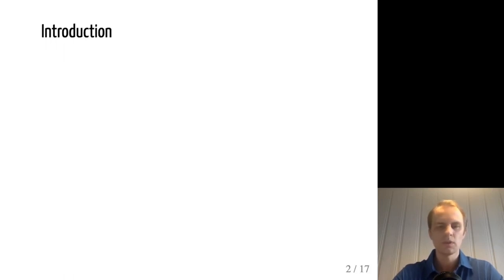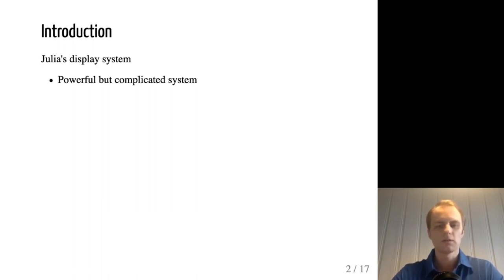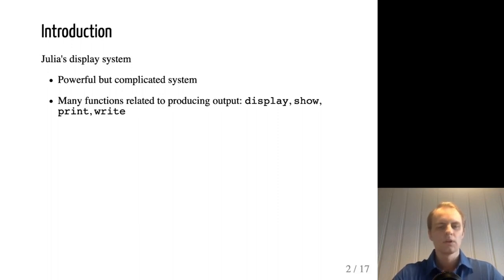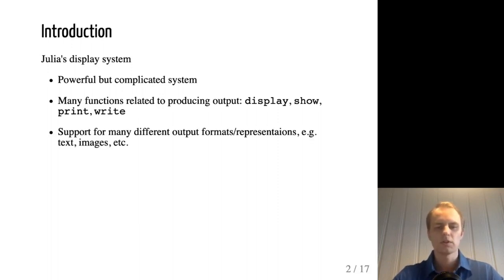The Julia display system is powerful but quite complicated. One reason it can be confusing at first is that there are a lot of functions involved in producing output — such as display, show, print, and write. The system also supports many different output formats or representations, so you can output text, images, HTML, and so on.